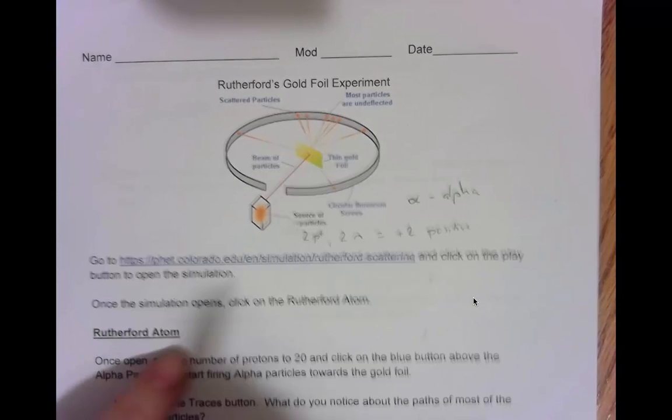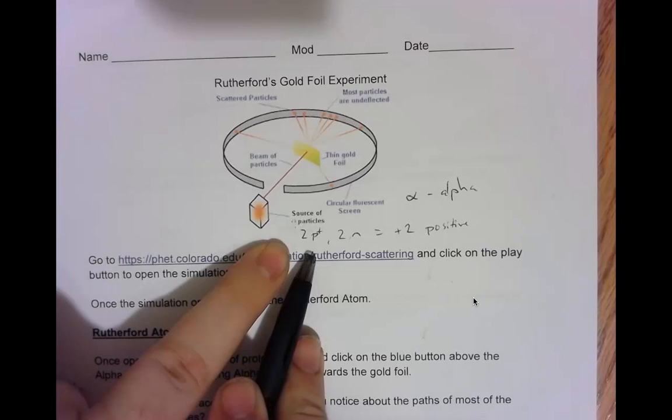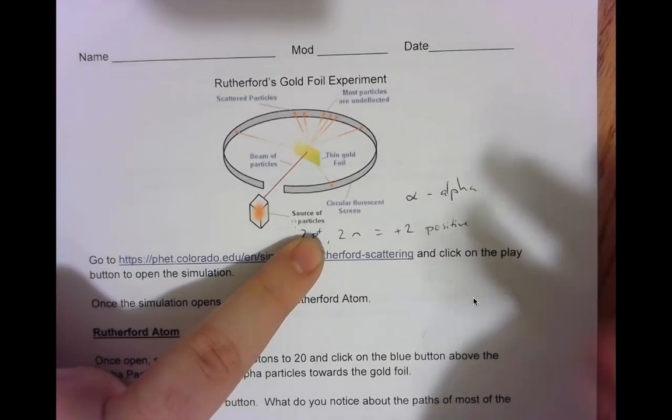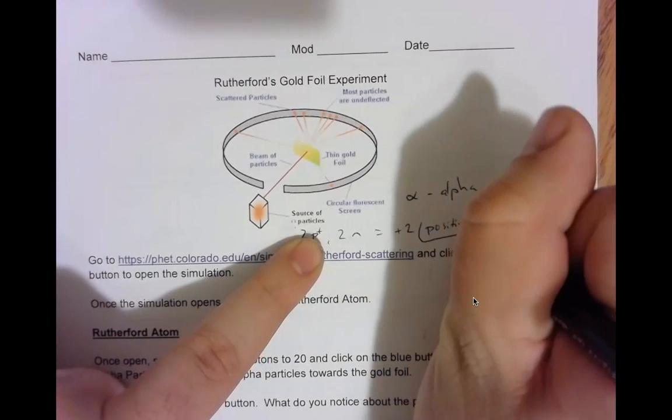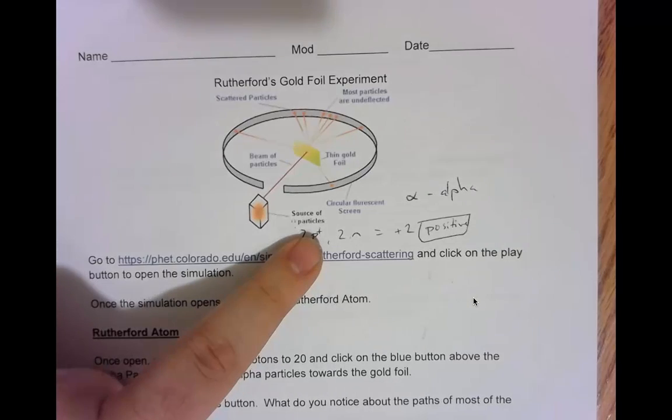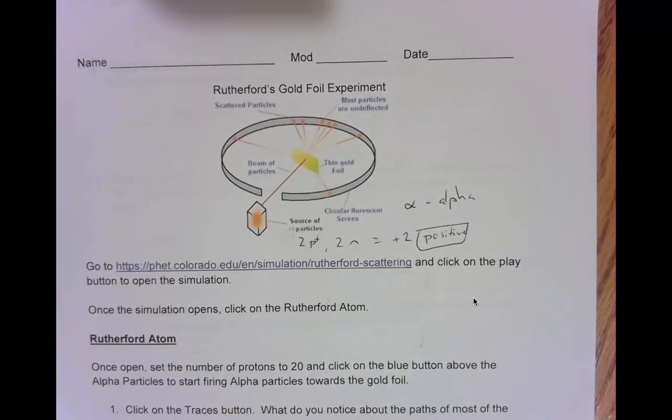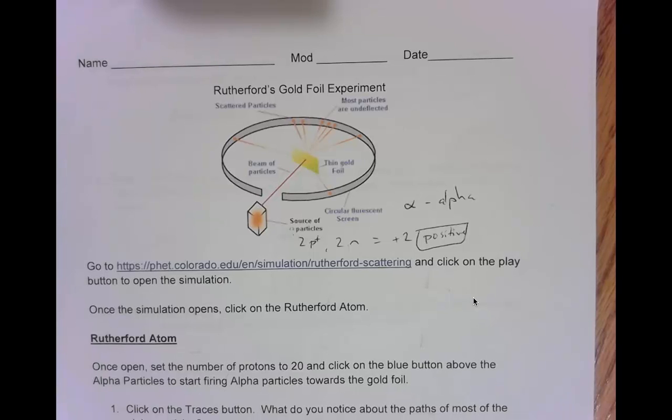One thing that's worth noting is alpha particles are made out of two protons and two neutrons. This means that we have a positive two charge, and overall our alpha particles are positive. That will be really helpful when you're thinking about some of these questions later in the simulation.